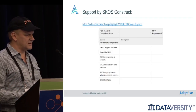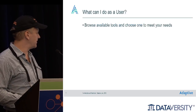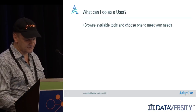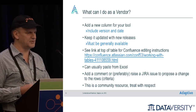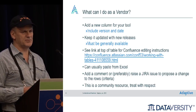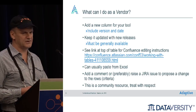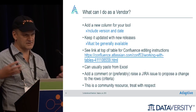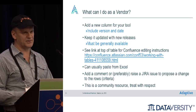As a user — either an end user or someone involved in FIBO — you can browse the available tools and, based on your criteria, choose a tool that meets your needs. As a vendor, you should add a new column to the table so people know about your tool and its capabilities. At the top of each column there's a version and date so people know how up-to-date the entry is. Keep it updated with new releases, and note that the tool should be generally available — it's pointless listing features for a very limited release people can't access.